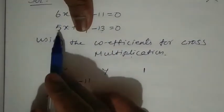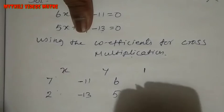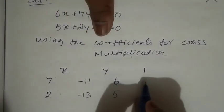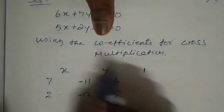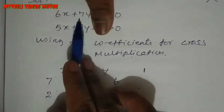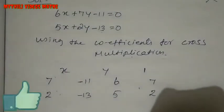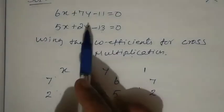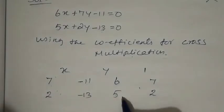The x coefficients are 6 and 5. If you want to do the constant term, you can identify the constant terms. The x coefficient is 6 and 5, and the y coefficient is 7 and 2. So the x term is equal to y coefficient, and the y term is equal to x coefficient.